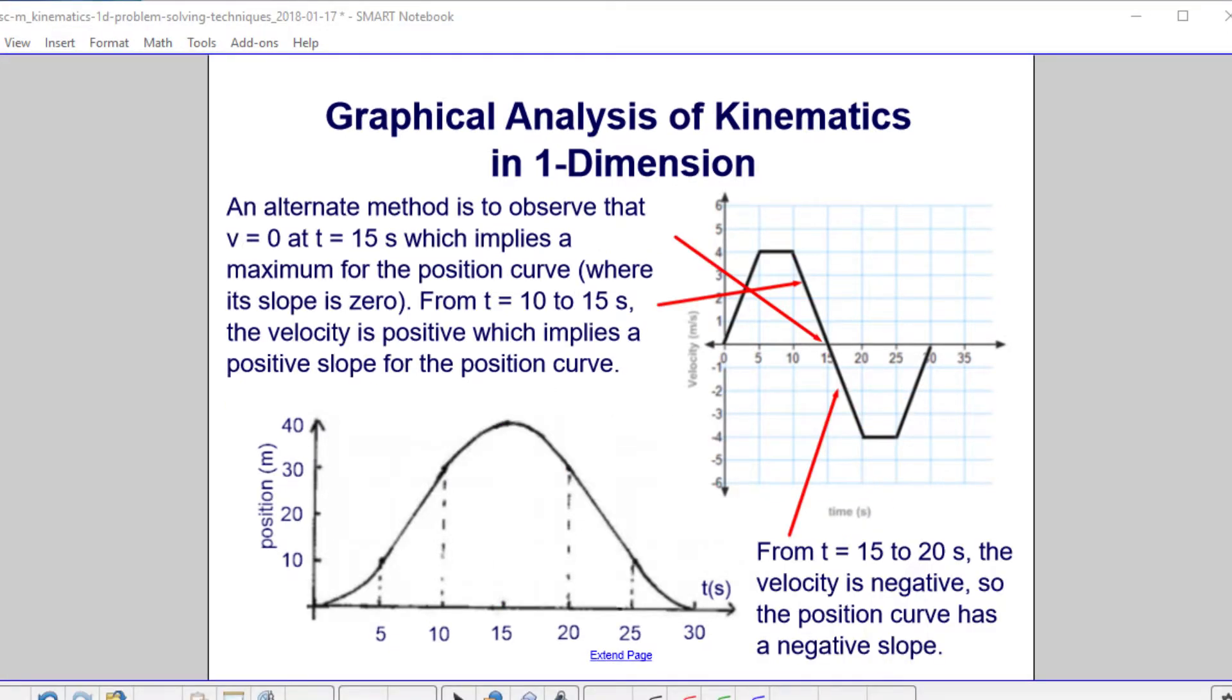Another way to look at that to help verify what we've done. We're focusing on where v goes to zero, at t equals 15 seconds. That implies a maximum for position curve because that's where the slope is zero. That's a zero slope. So that's going to be my maximum. I take the derivative of that, I get zero. That's the maximum position I get away from where I started. And your velocity is positive, so that means you need a positive slope for the position curve. Positive slope everywhere there.